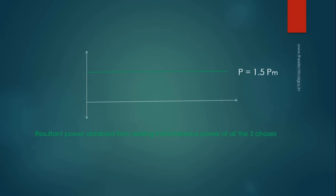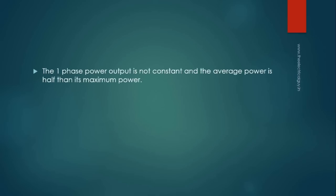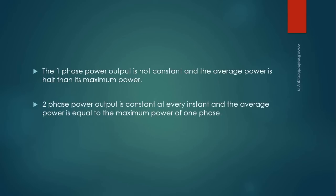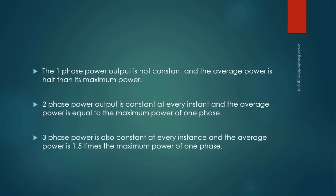So to summarize this topic, the single-phase power output is not constant and the average power is half than its maximum power. Two-phase power output is constant at every instant and the average power is equal to the maximum power of one phase. Three-phase power is also constant at every instant and the average power is 1.5 times the maximum power of one phase.